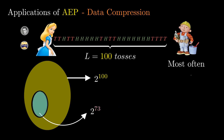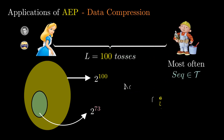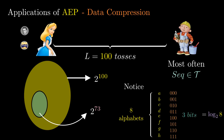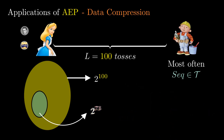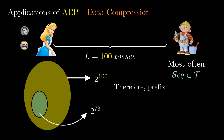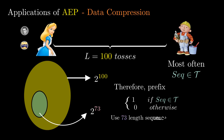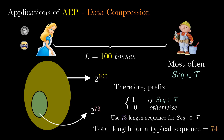Alice divides the set of sequences into two parts: one containing typical sequences and the other containing the rest. She first conveys to Bob whether her sequence is typical or not, which requires only one bit. If her sequence is typical — which will be the case most of the time — she only needs to send 73 bits. If the sequence is atypical, she needs to send 100 bits. But on average, over several experiments, she will actually be sending fewer than 100 bits.